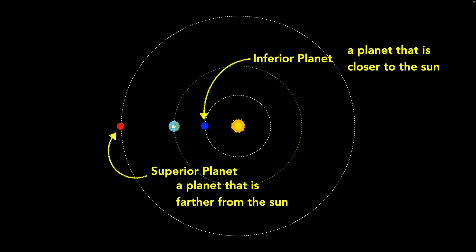If you were on Mars, that would change. From Mars' point of view, Earth is an inferior planet because from Mars, Earth is closer to the sun. So usually we take the perspective of an observer on Earth when we talk about inferior and superior planets.